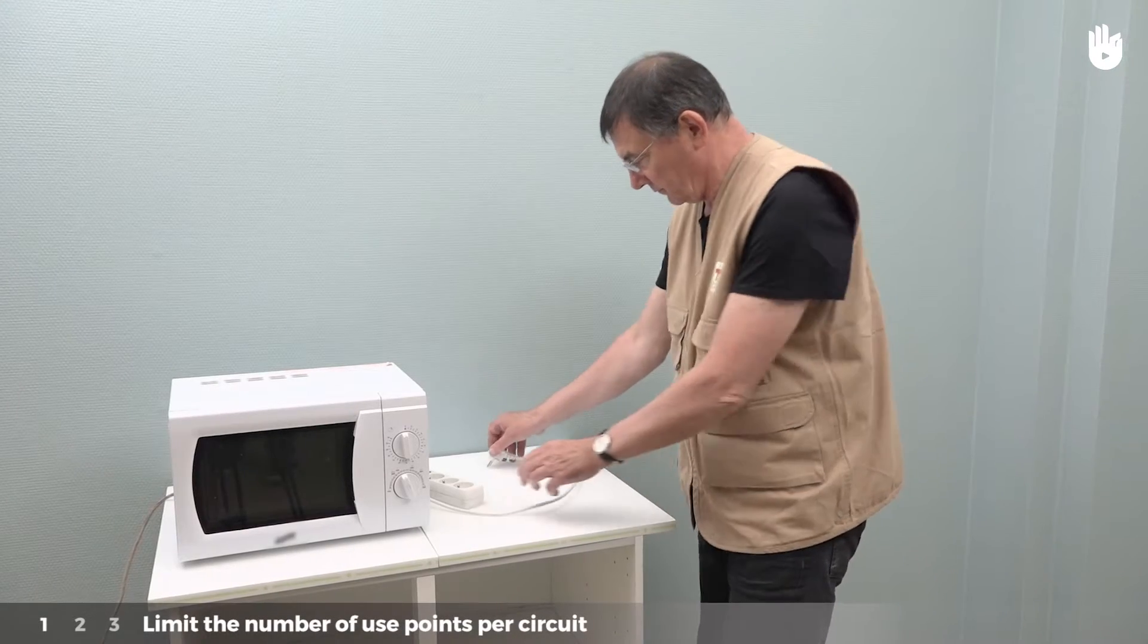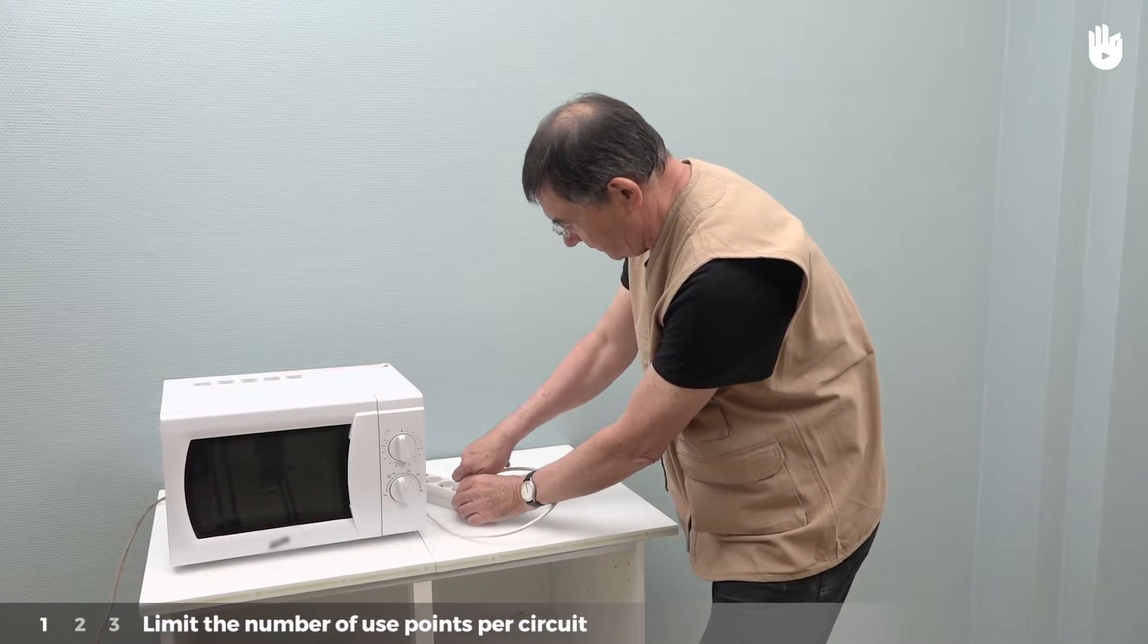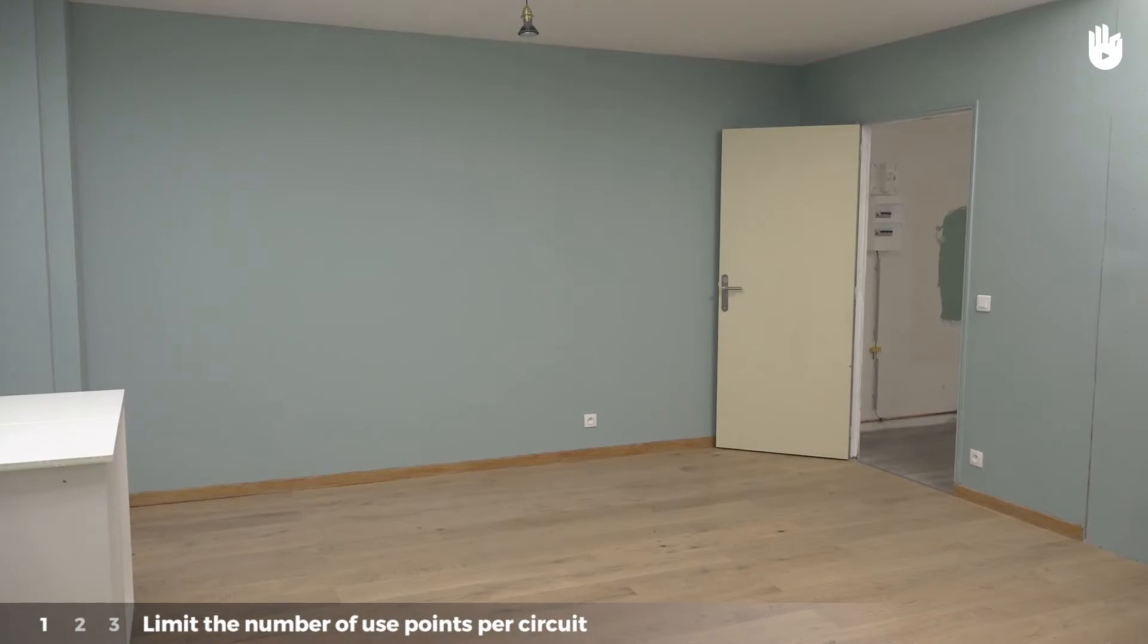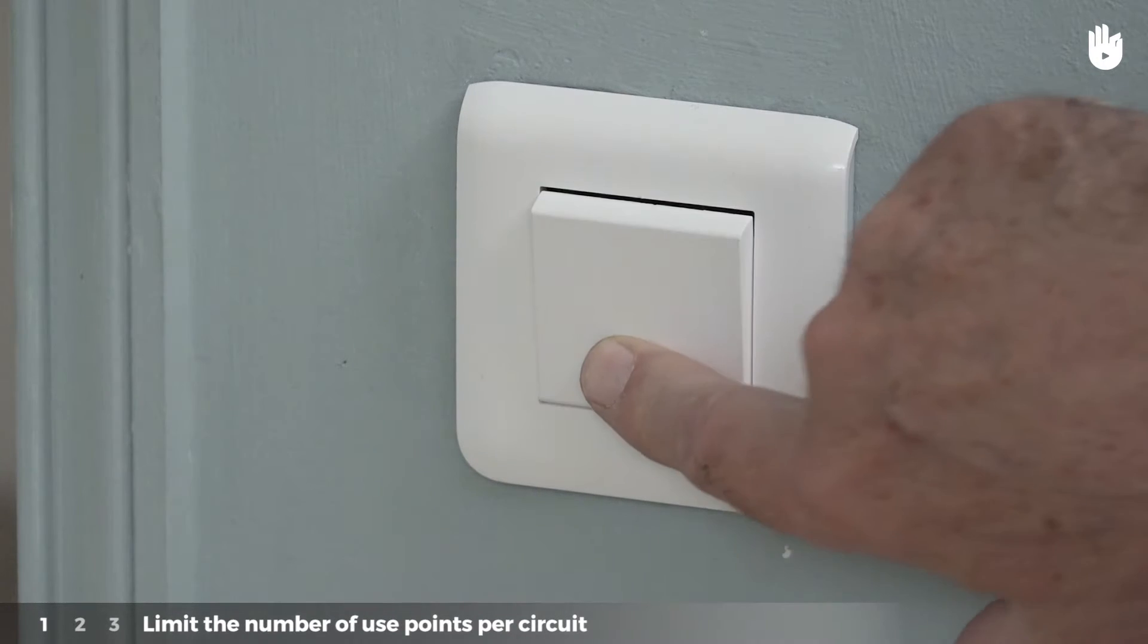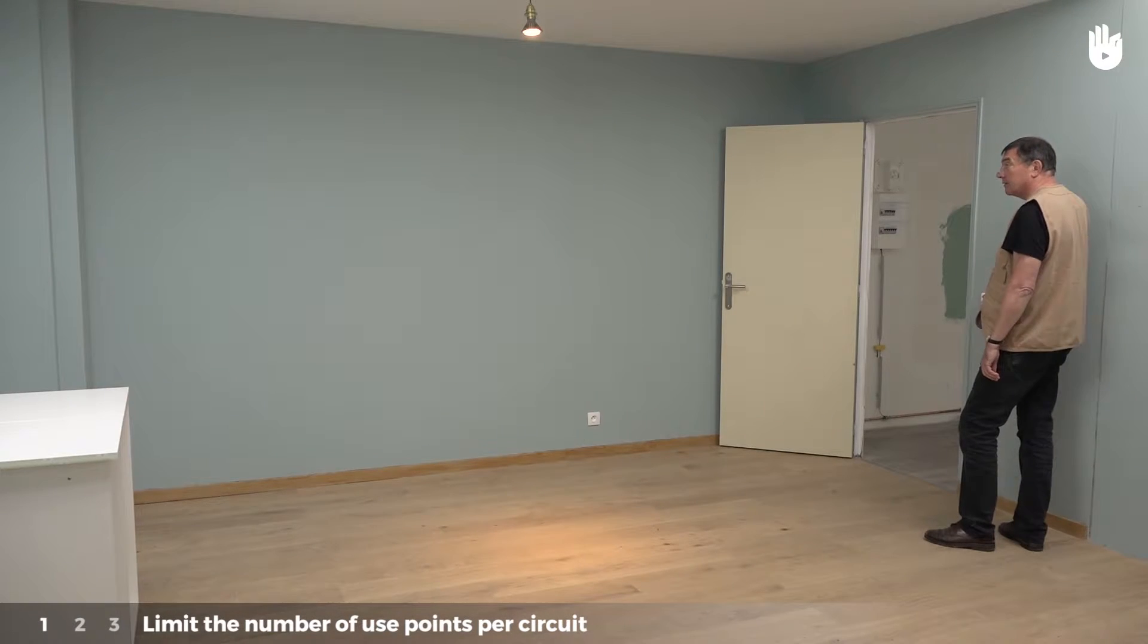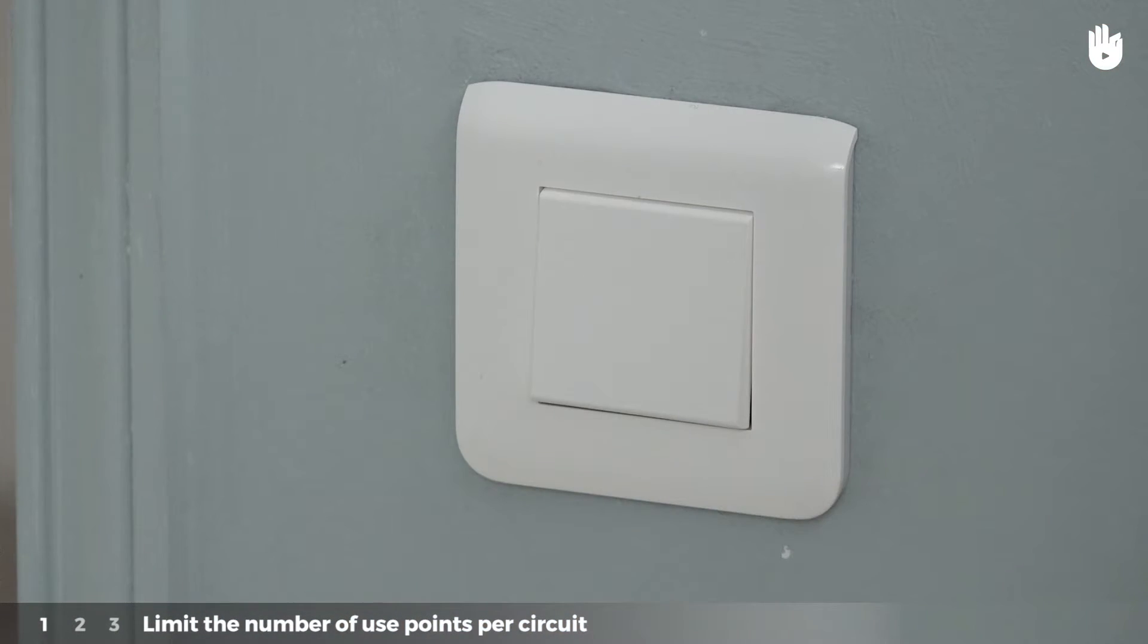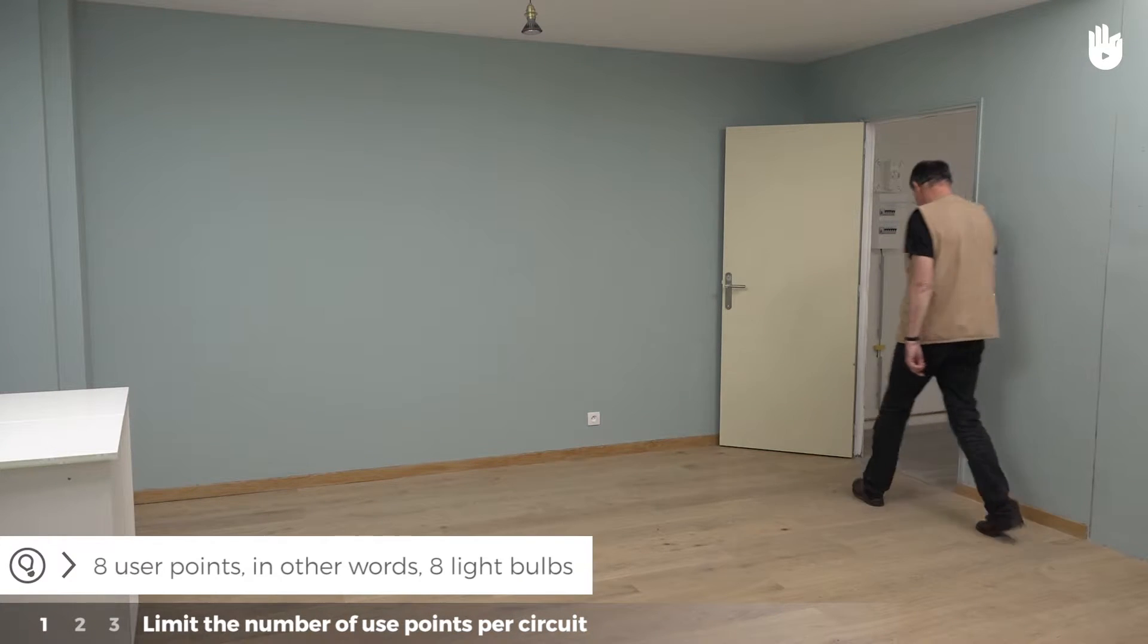Step 1: Limit the number of user points per circuit. The maximum number of user points per circuit varies depending on the nature of the circuit. For example, for a lighting circuit with switches, it should be limited to 8 points or 8 light bulbs.